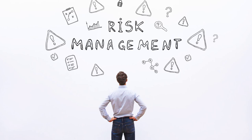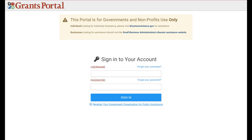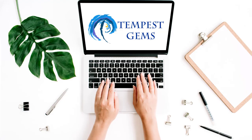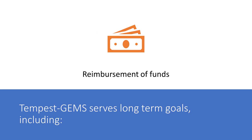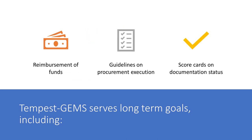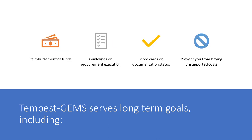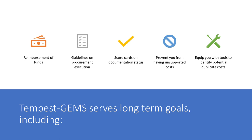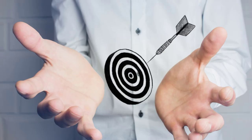It's hugely expensive for FEMA to put human beings into communities devastated by disasters, and it increased risks too. The Grants Portal is not a grant management system designed for states or applicants. It is a means to complete the grant application in the wake of or in the middle of a disaster. Tempest Gems is a grant management software application used by states and by applicants. We built this tool to serve long-term goals such as reimbursement of funds, guidelines on procurement execution, and scorecards on documentation status. We aim to prevent you from having unsupported costs and give you tools to identify potential duplicate costs.